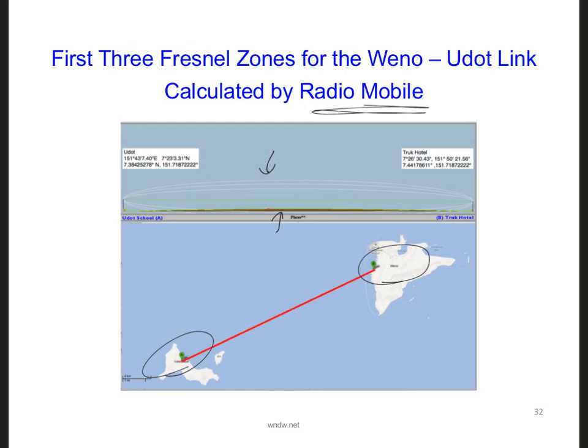Take out your in-class project notebooks and make a note about how we should be careful about multipath propagation. Describe what Fresnel zones are and whether our Wayno to UDOT link satisfies our preference to keep 70% of the first Fresnel zone clear.